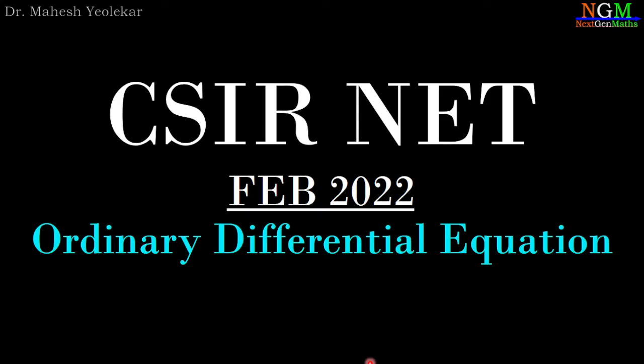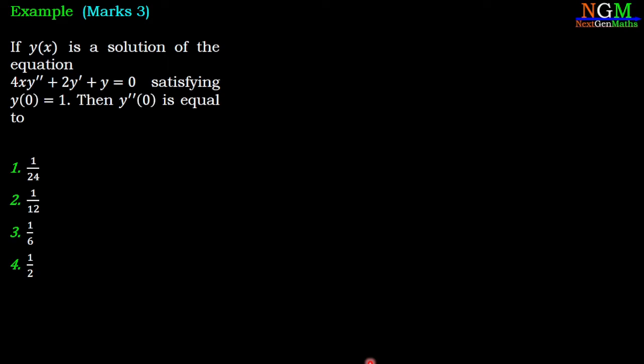In this video we are going to discuss a problem from CSIR NET 2022, a problem of ordinary differential equations. The equation is: let y be a solution of the equation 4xy'' + 2y' + y = 0, satisfying y(0) = 1. Then y''(0) is equal to—we have given four options.